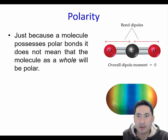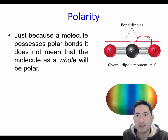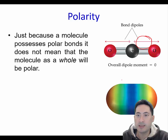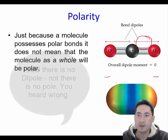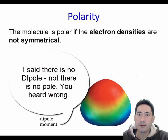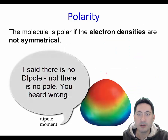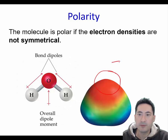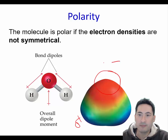Just because a compound has a polar bond — a polar covalent bond — does not mean it is a polar molecule. It must not only have a polar bond, it must also be asymmetrical. Because this molecule is symmetrical, there is a negative end here and a negative end here, and there is no pole. You can see that water is a very polar molecule — it has a negative pole here and two positive areas.